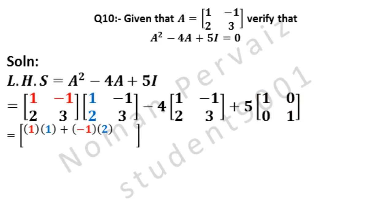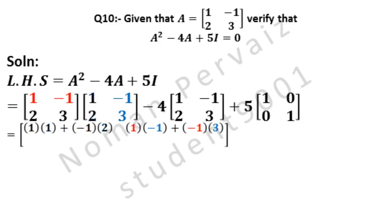So first row of first matrix is multiplied with the first column of second matrix. Plus comes from the formula, and minus 1 from first matrix is multiplied with 2 of second matrix. Here first row of first matrix is multiplied with the second column of second matrix.